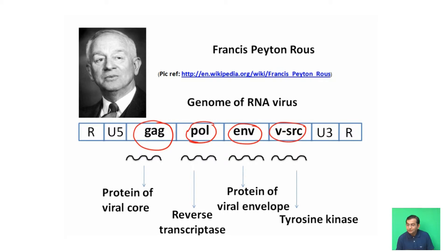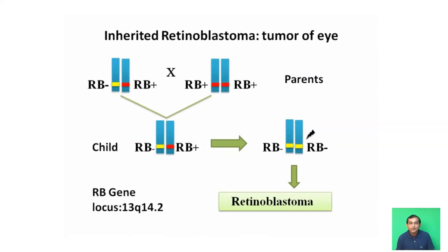This is one of the landmark discoveries from which it was established that oncogenes are responsible for causing cancer. Another most important gene is retinoblastoma, or the RB gene, which is responsible for causing tumor of the eye. The RB gene is one of the first discovered tumor suppressor genes.